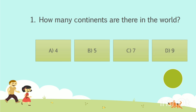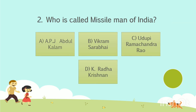Question No. 1. How many continents are there in the world? Option A: 4. Option B: 5. Option C: 7. Option D: 9. Your time starts now. The answer is Option C, 7. Let's go to the next question.